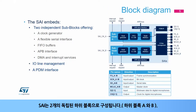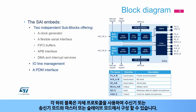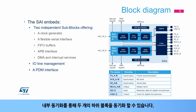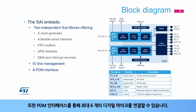The SAI is composed of two independent subblocks, subblock A and B. Each subblock has its own APB interface, clock generator, FIFO buffer, DMA interface, and interrupt interface. Each subblock can be configured in receiver or transmitter mode, and in master or slave mode, with its own protocol. Internal synchronization allows two subblocks to be synchronized. For each subblock, FS is the frame synchronization, SCK is the bit clock, SD is the serial data, and MCLK is the master clock. In addition, a PDM interface allows the connection of up to six digital microphones.